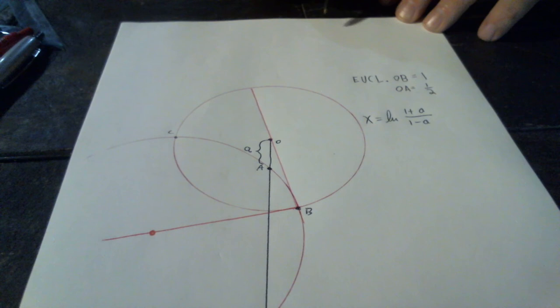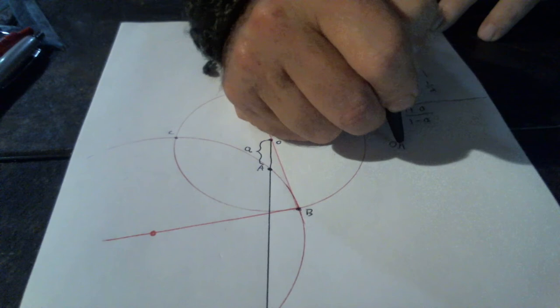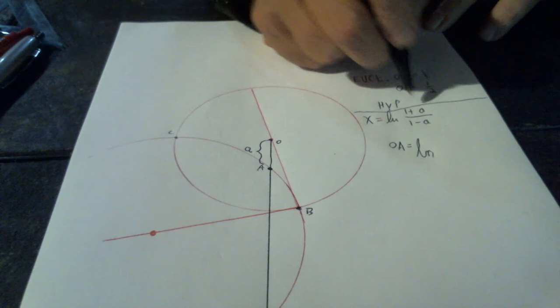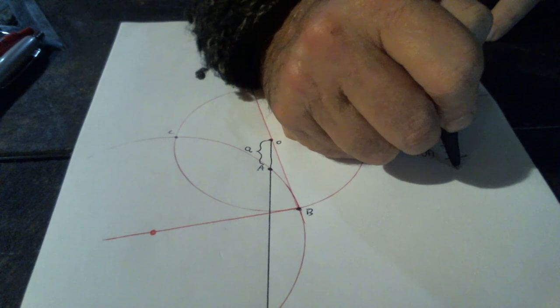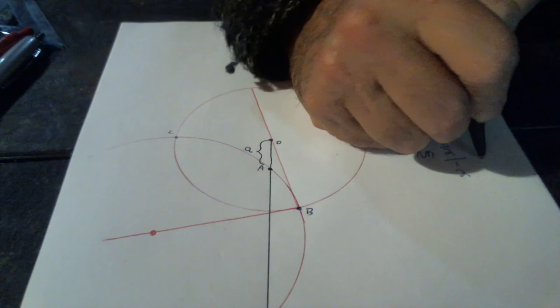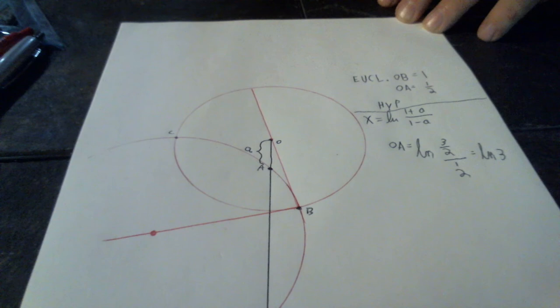Now let's see what the hyperbolic distance would be. The hyperbolic distance of OA would be the natural log of (1 plus one-half) — that's three-halves — divided by (1 minus one-half) — that's one-half. The twos cancel, so we have the natural log of 3. The natural log of 3 is bigger than one — it's 1-point-something. If you don't believe me, you can get out your calculator and give it a try.